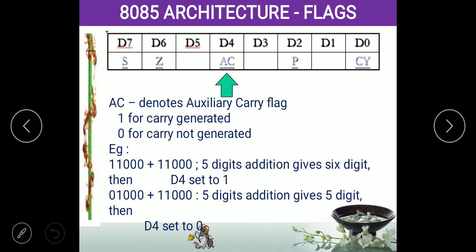Now, the auxiliary carry flag — AC. For example, for visualization purpose only: think of adding two 2-digit numbers and getting a 3-digit number. That third digit is the carry, and it is called the auxiliary carry.